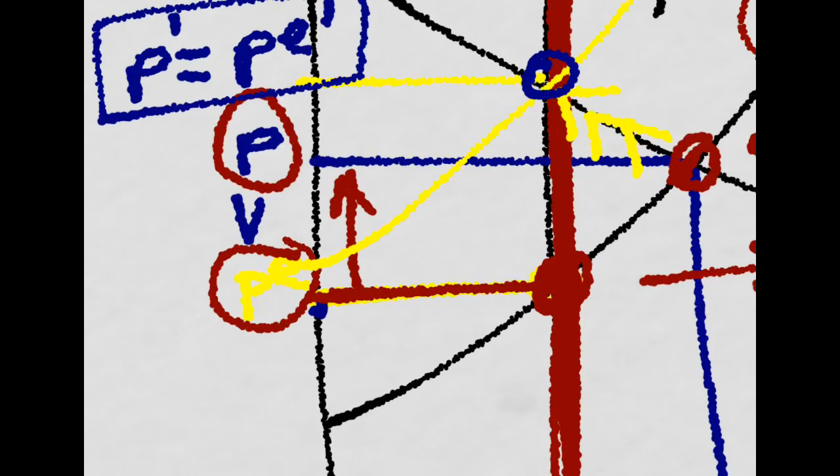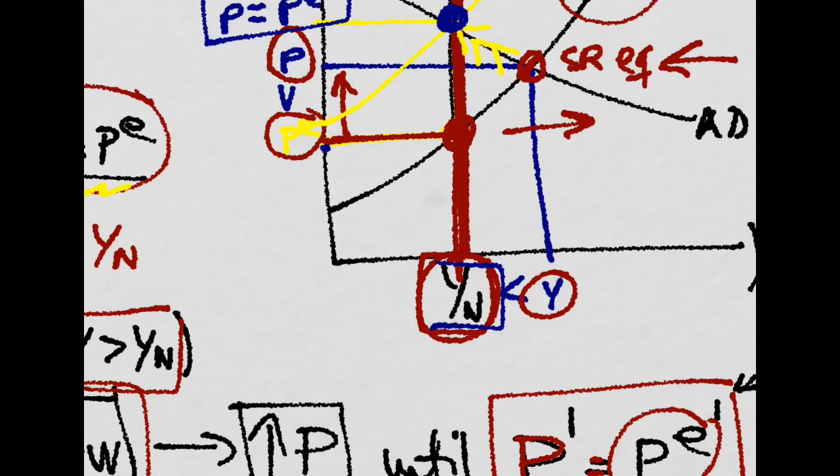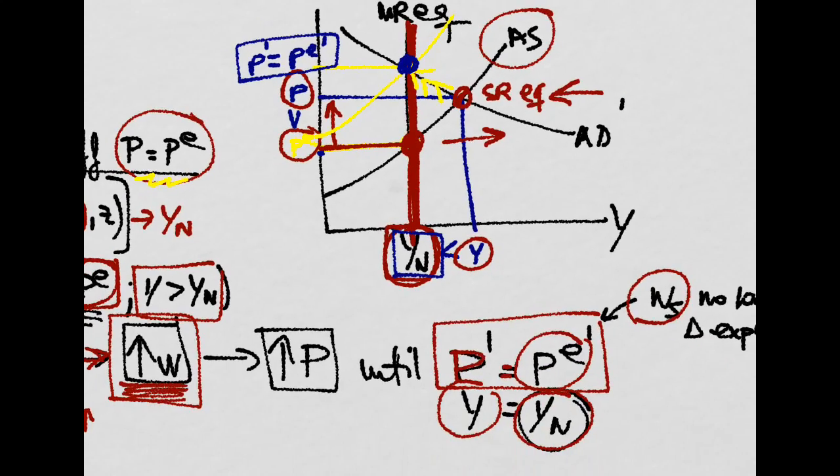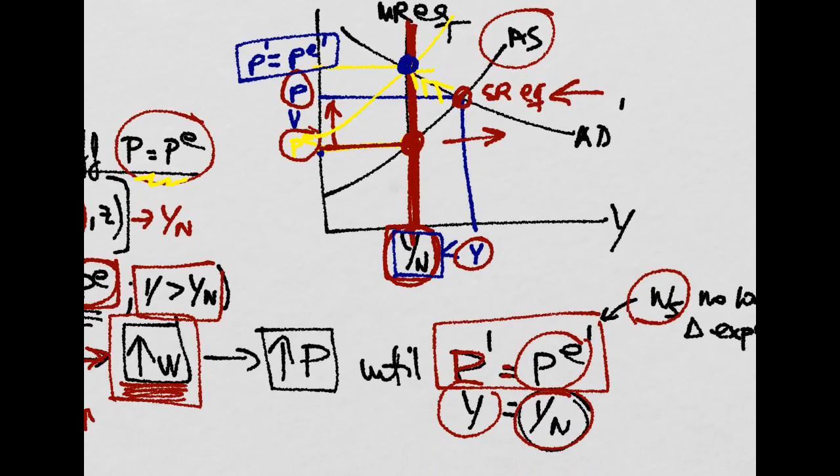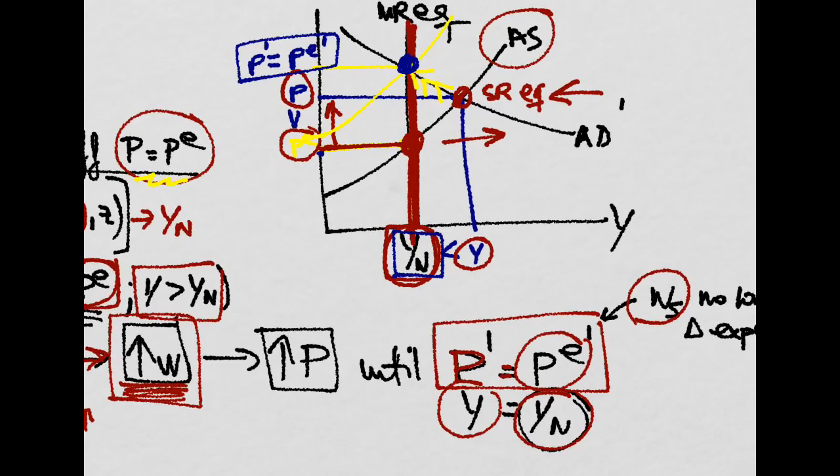So, we are, again, at a medium run equilibrium in the AS-AD. And we have returned to that medium run equilibrium through a change in the expected price level.